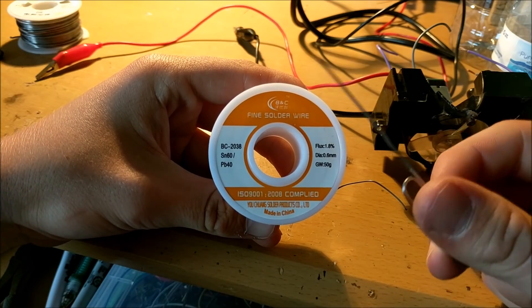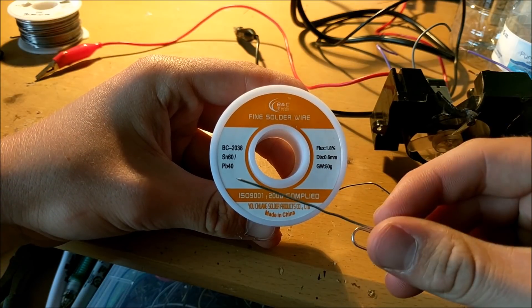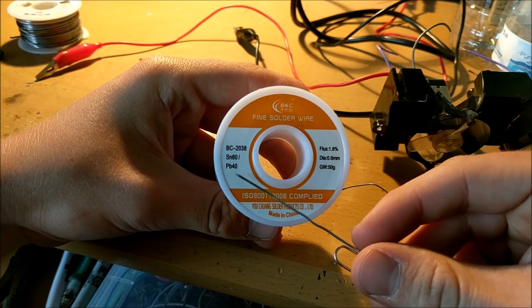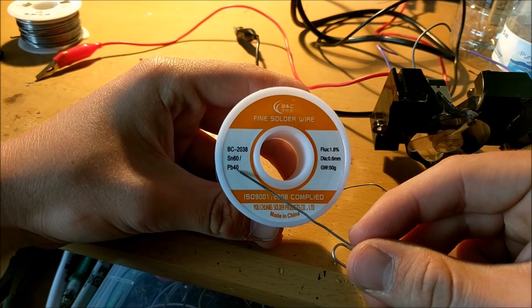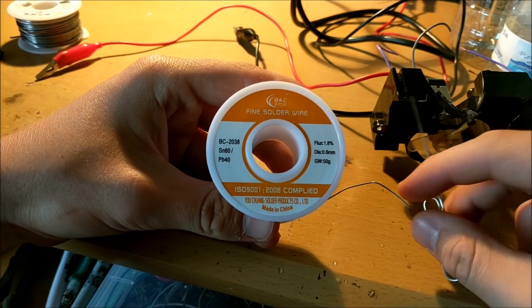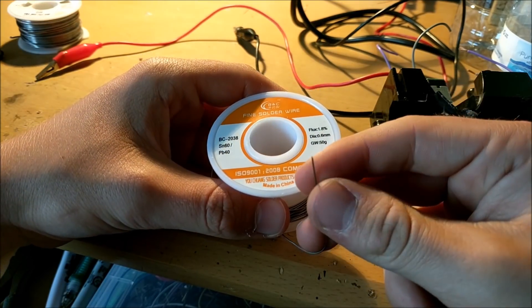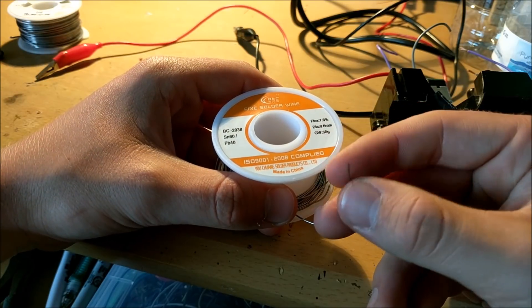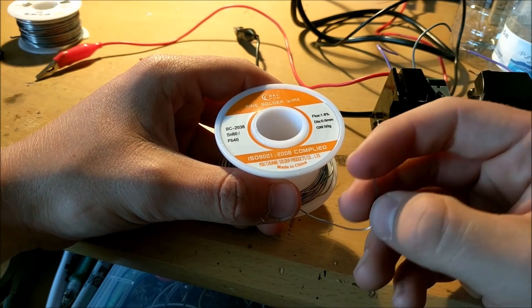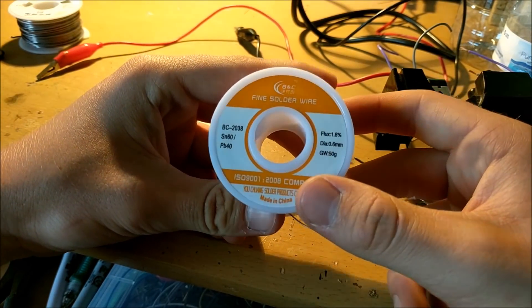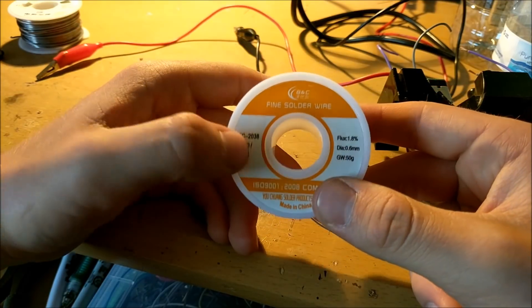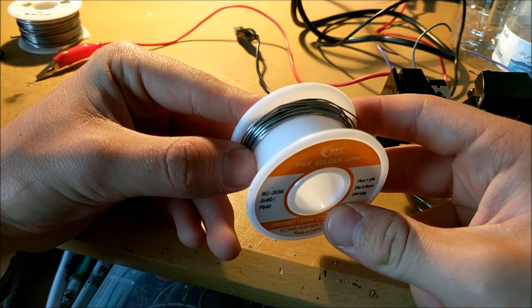Now as important as solder is, there are some dangers that come from using it. The number one danger being the fact that it is 40% lead, where it says PB40. When you work with solder and you grab it with your hands, you get lead on your fingers, and so if you eat after handling solder, then that lead can be introduced into your bloodstream, which is not good for you at all.